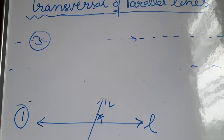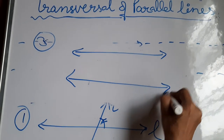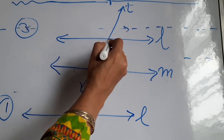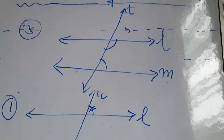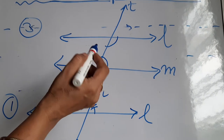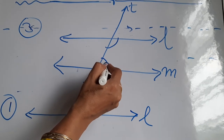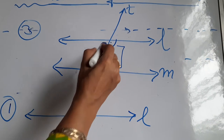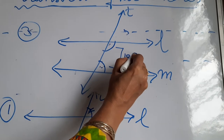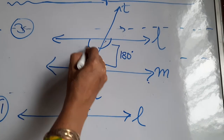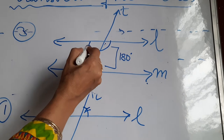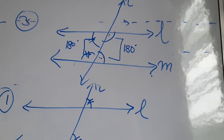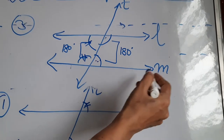The third fact is about co-interior angles. If two parallel lines are given and T is the transversal, the sum of co-interior angles is always supplementary — that is, interior angles on the same side of the transversal always add up to 180 degrees. Whatever angles are on each side, their sum will always be 180 degrees when the lines are parallel.